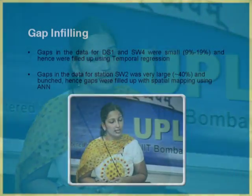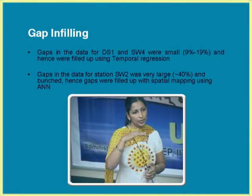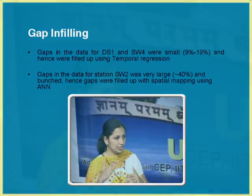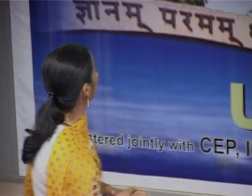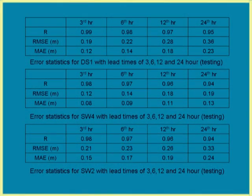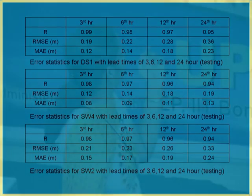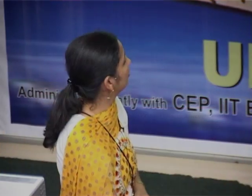In all the forecasting, we saw that when it comes to peaks, there is a little deviation. So we tried to improve the forecasting scheme using some hybrid models. In this hybrid model, we take the input data and for each lead time hour of 3, 6, 12, and 24, we take these outputs again as inputs along with the observed values using ANN.